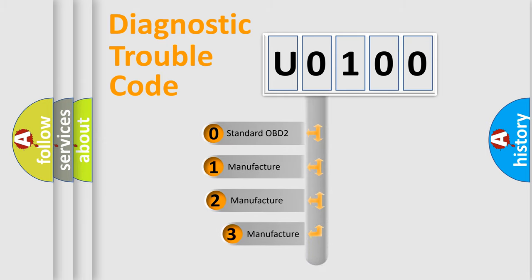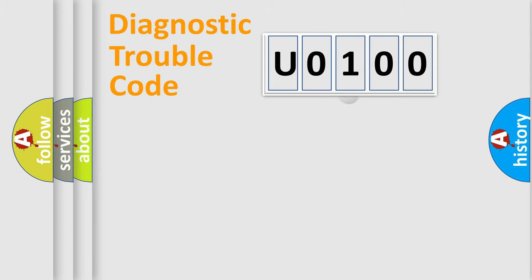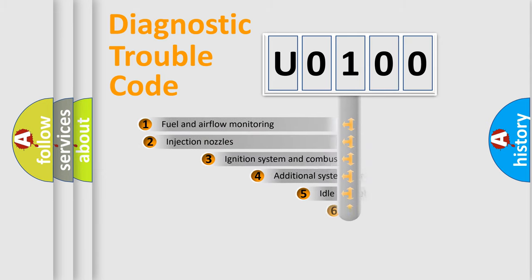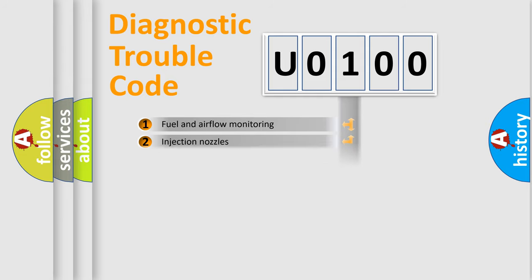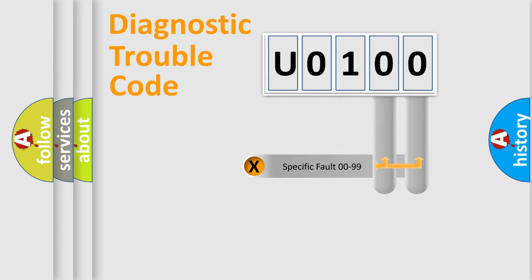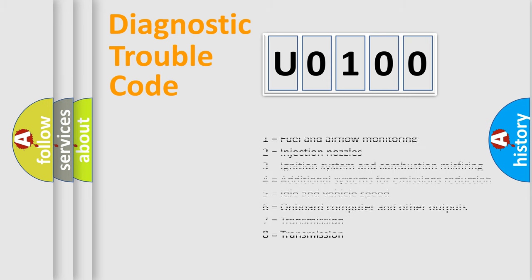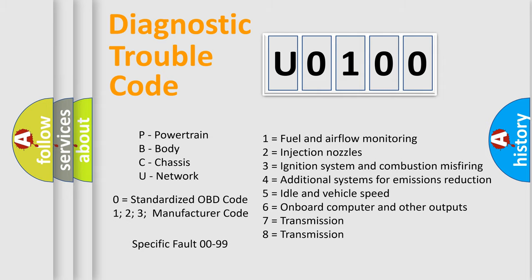If the second character is expressed as zero, it is a standardized error. In the case of numbers 1, 2, or 3, it is a more specific expression of a car-specific error. The third character specifies a subset of errors. This distribution is valid only for the standardized DTC code. Only the last two characters define the specific fault of the group, and such division is valid only if the second character code is expressed by the number zero.